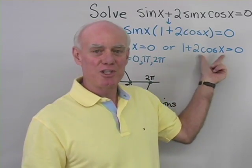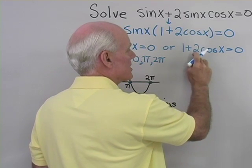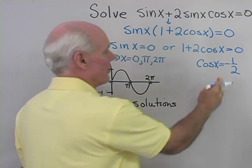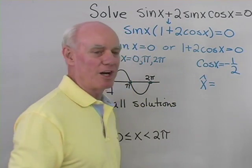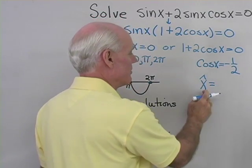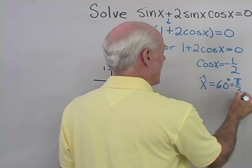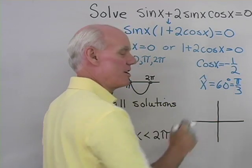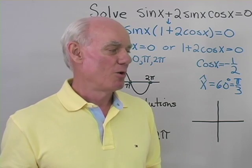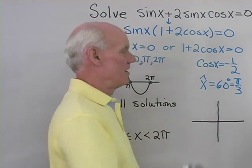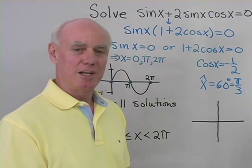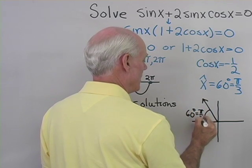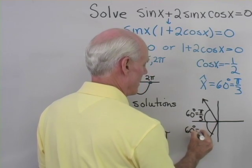Now for 1 plus 2 cosine x equals 0, I solve for cosine x by adding negative 1 to both sides and dividing by 2. Cosine x equals negative 1 half. The reference angle is where cosine equals 1 half, which is 60 degrees, or pi over 3. Cosine is negative in quadrants 2 and 3, so I draw a reference angle of pi over 3 in both quadrant 2 and quadrant 3.